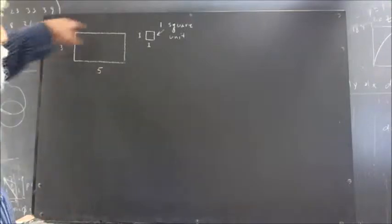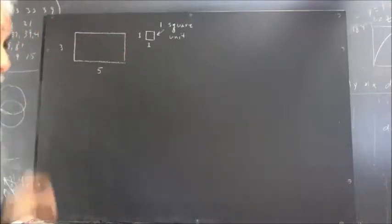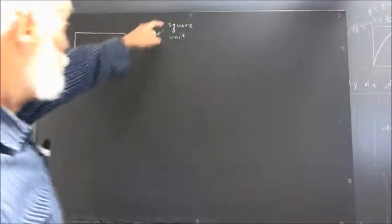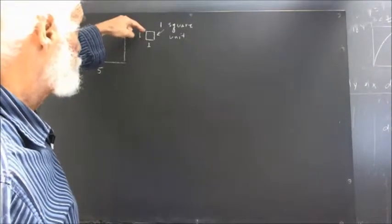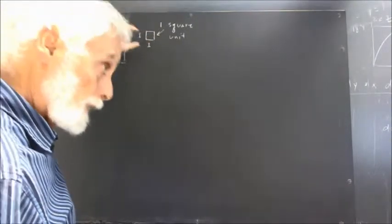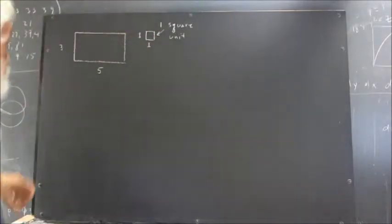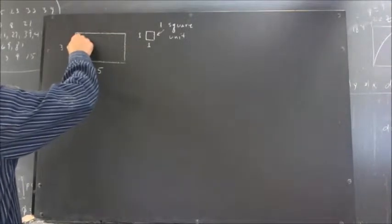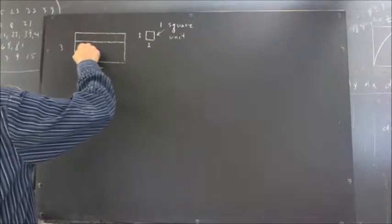Or how much land would we own if we owned this rectangle of 3 units by 5 units? Just as an example, we would agree that one square unit is a square one length unit on each side. If we make that agreement, then we can divide this rectangle very easily into units of one square unit each.